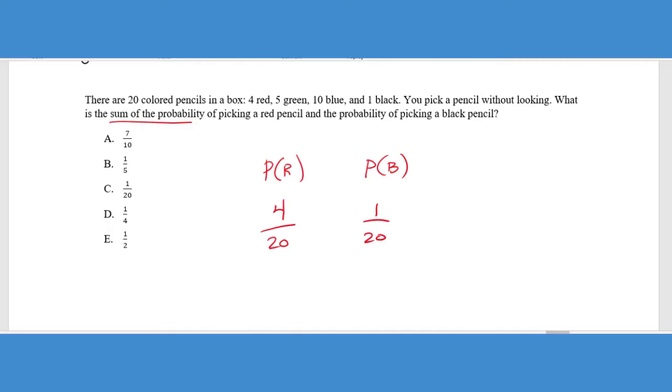If you look at our answer choices, 1 out of 20 is an answer choice. 4 out of 20 would reduce to 1/5, which is also an answer choice. So you can see B and C are bait answers, but they clearly stated we wanted the sum of those probabilities. So we need to add those together to get 5 out of 20, which reduces to 1/4. That gives us answer choice D. Years ago in the ACT, if you could just do one of those, that's all you would have to do. But you can see here they're layering on a little bit of additional knowledge that you need to know.